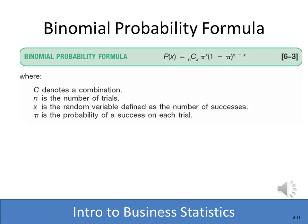Here's the binomial probability formula — it looks intimidating at first but really isn't. You can compute binomial probabilities using this formula, or a table in the back of your textbook, or a binomial distribution function in Excel. The formula uses a combination where n equals the number of trials, x is the random variable defined as the number of successes, and pi represents the probability of success. Once you have those variables it's very easy to solve.